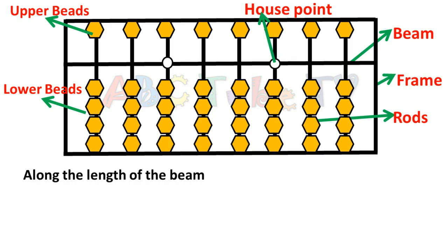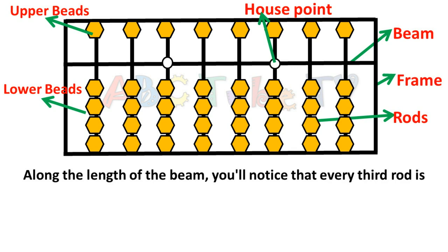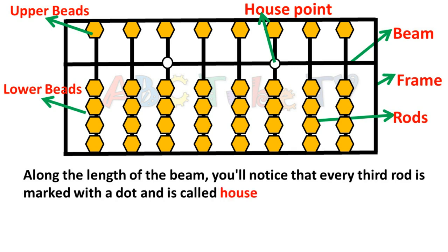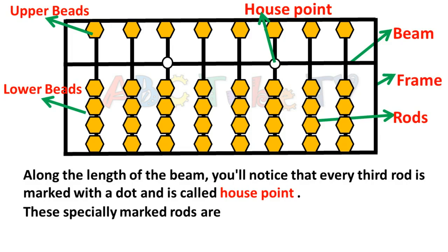Along the length of the beam, you will notice that every third bead is marked with a dot and is called a house point. These especially marked rods are called unit rods.